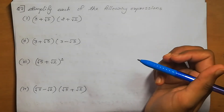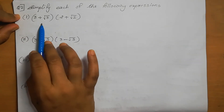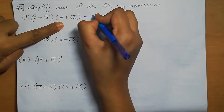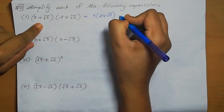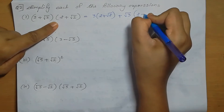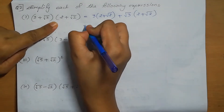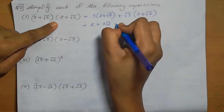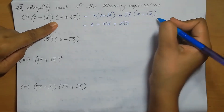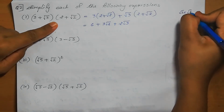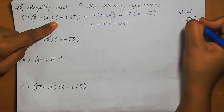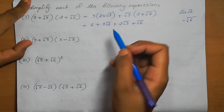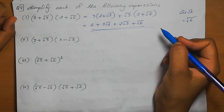Question number 2: Simplify each of the following expressions. First one: (3 + root 3) into (2 + root 2). Opening the bracket: 3 into 2 plus root 2, plus root 3 into 2 plus root 2. That gives 6 plus 3 root 2 plus 2 root 3, and root 3 into root 2 is root 6. There are no like terms, so the final answer is 6 plus 3 root 2 plus 2 root 3 plus root 6.